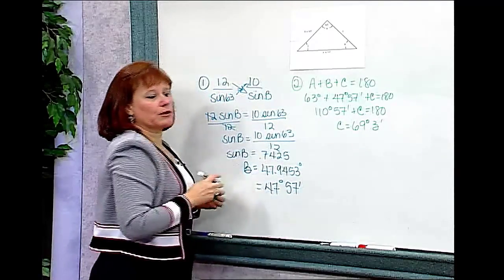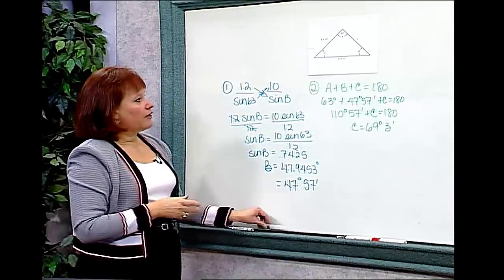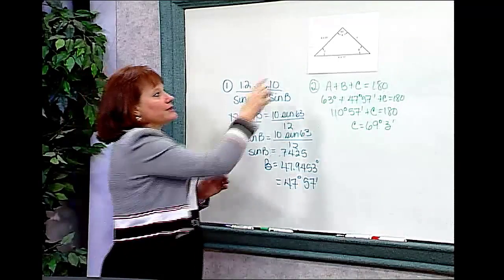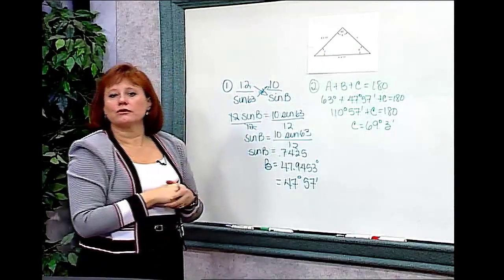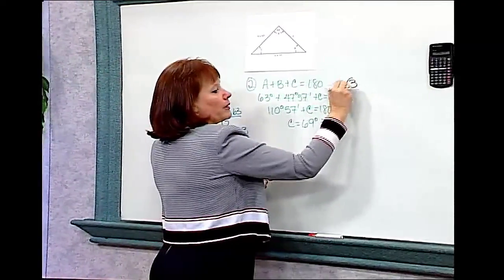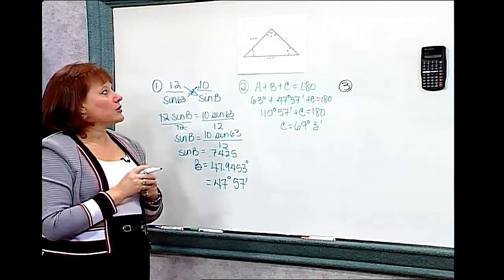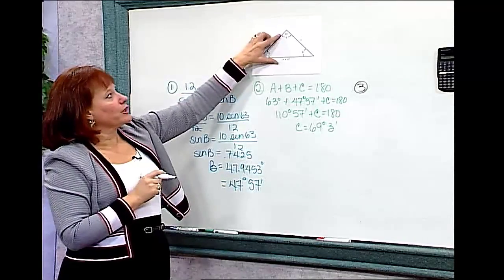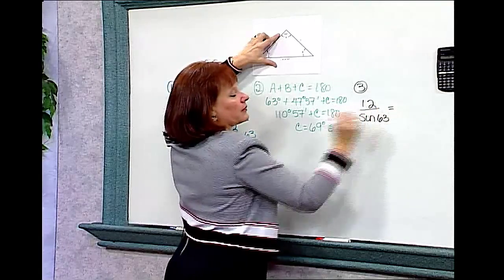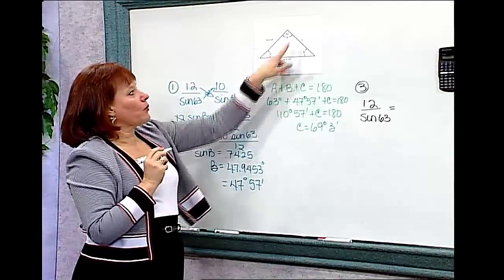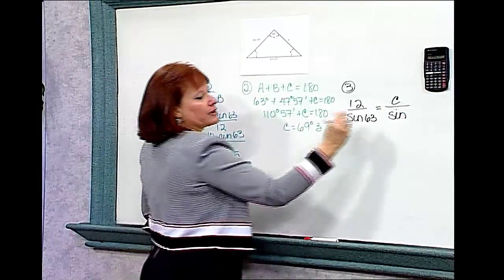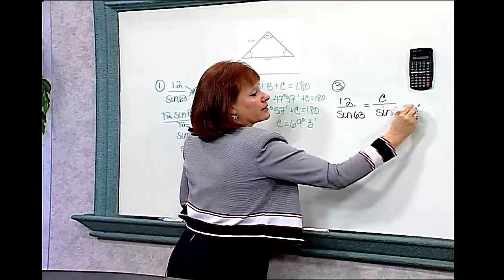Be careful with that 3 minutes when entering it into the calculator. The only missing piece now is side C. Since we know angle C, we can set up a Law of Sines ratio. Using the known ratio — 12 over sine 63 — equal to C over the sine of angle C (69 degrees and 3 minutes).